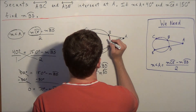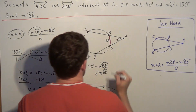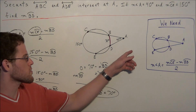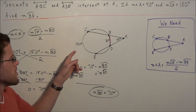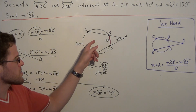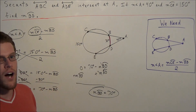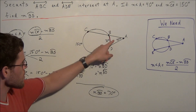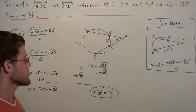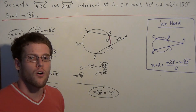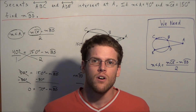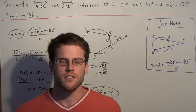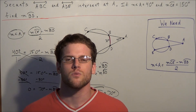We can also label this segment here — arc BD is 70 degrees. This theorem is very useful for finding the missing arc measure or the missing angle when we have two intersecting secants forming an angle outside of the circle. This concludes the video on angles formed by intersecting secants. Thank you all for watching and I hope that this was helpful.